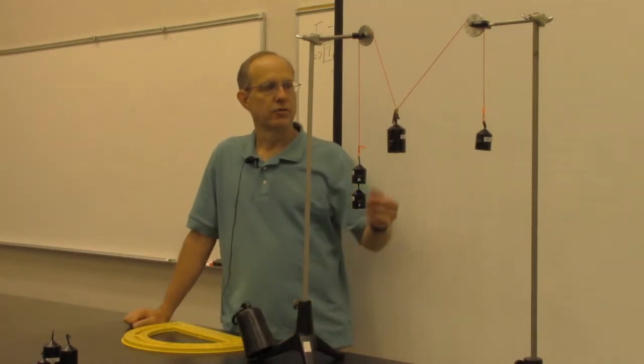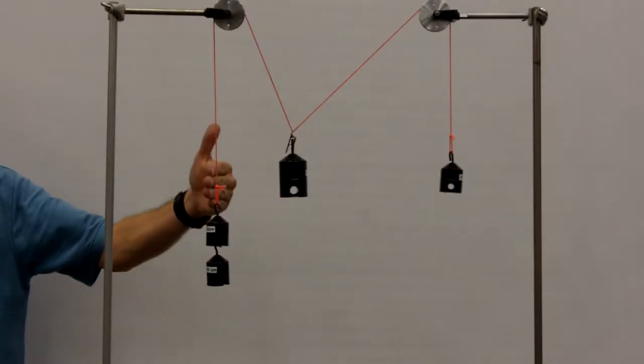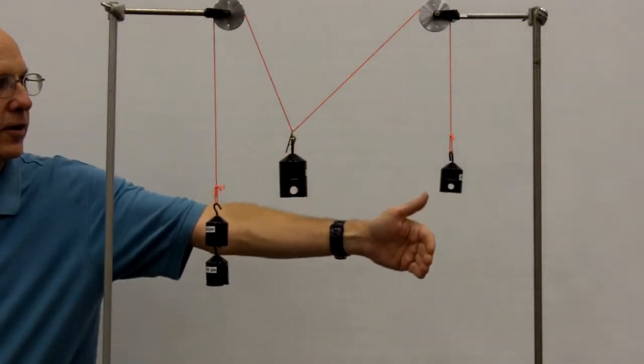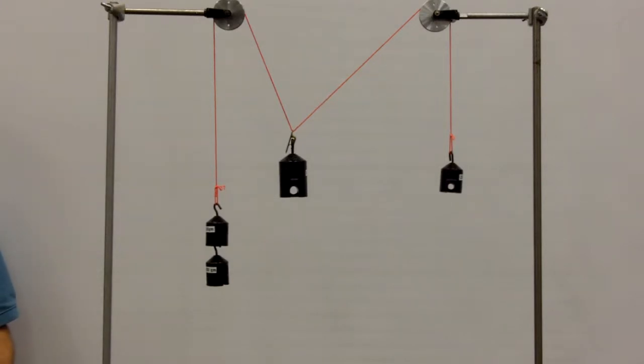The center mass is a 500 gram mass, the mass over to this side is 400 grams, and the mass on this far side here is 200 grams. And so, the object will hang in equilibrium.